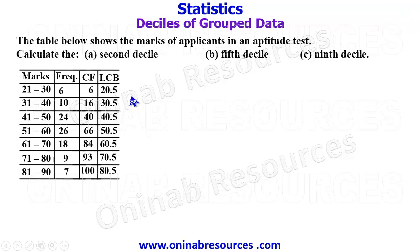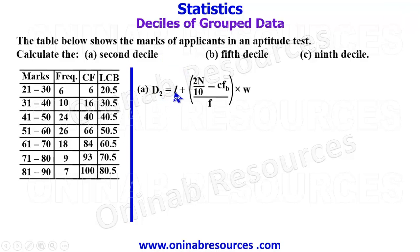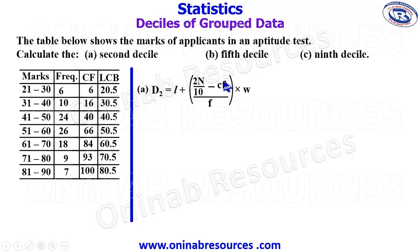With the expanded table ready, we can now find the second decile using the formula: D2 = L + ((2n/10 − CFb) / f) × w. Here, L is the lower class boundary of the second decile class, 2n/10 picks the second part out of 10, CFb is the cumulative frequency before the second decile class, f is the frequency of that class, and w is the class width.